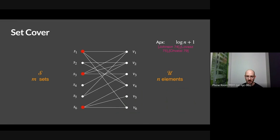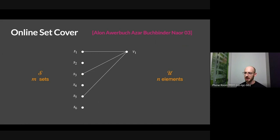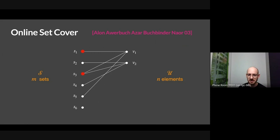So what's the online version of set cover? It's by now a somewhat classic framework, introduced by Alon, Auerbuch, Hazar, Buchbinder, and Naor in 2003 — about 20 years old now. It's the same problem, only now we don't know the right-hand side of this graph ahead of time; it's going to be shown to us online. At every point in time, a vertex shows up, and as soon as it does, we have to immediately pick some set to cover the element. For example, you might pick S1 to cover incoming element v1. At time 2, element v2 shows up and it's not already covered, so you need to pick some set to cover v2.